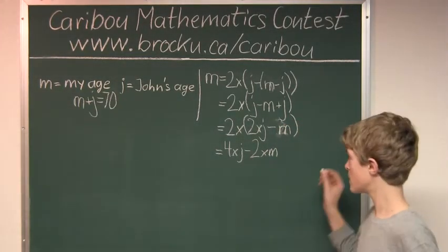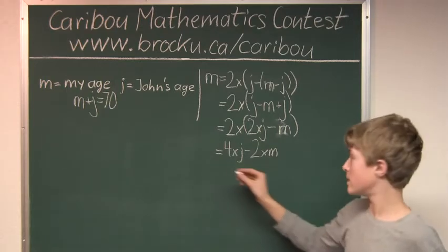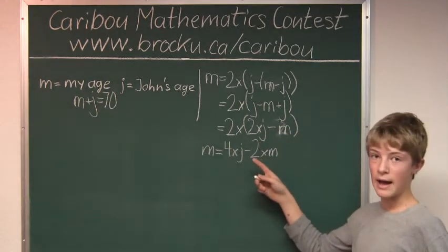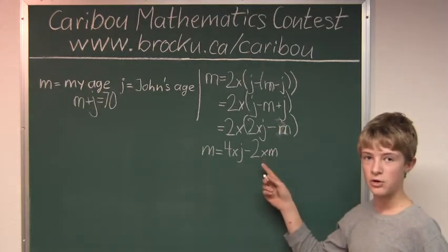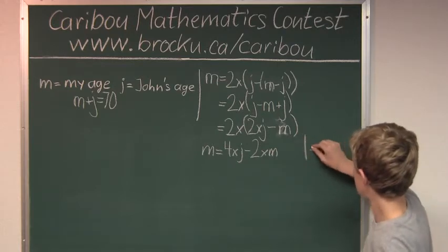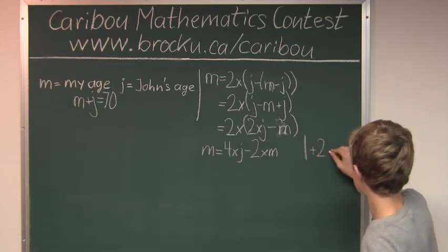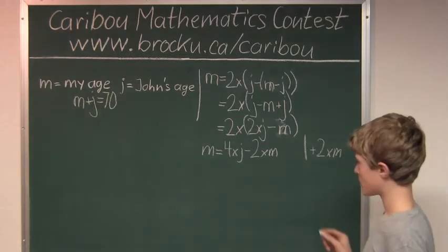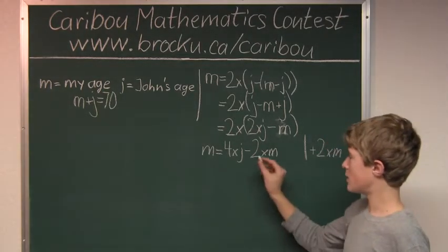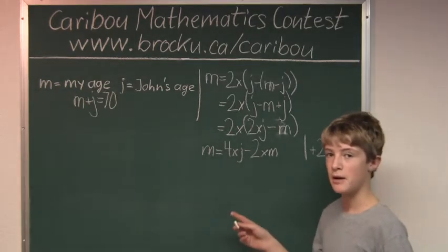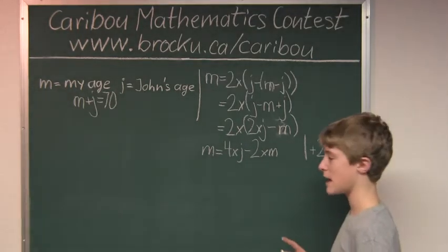Now, since we want m on one side and we have minus 2 times m on this side, we would have to do plus 2 times m. On the left side, we would have m plus 2m is 3m. And on the right side, we would just have 4 times j.